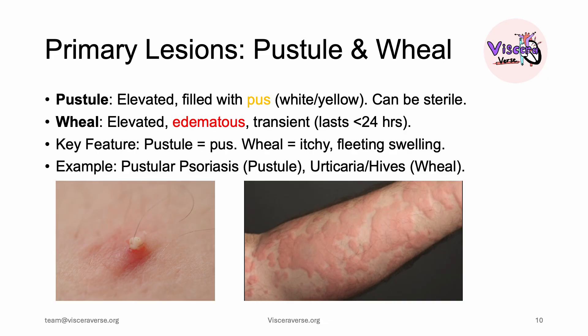A pustule is a primary skin lesion that is elevated and filled with pus. It could be white or sometimes yellowish, as you can see on screen. These could be either sterile or infectious — a typical example of an infectious pustule is acne, and an example of a sterile pustule is pustular psoriasis.